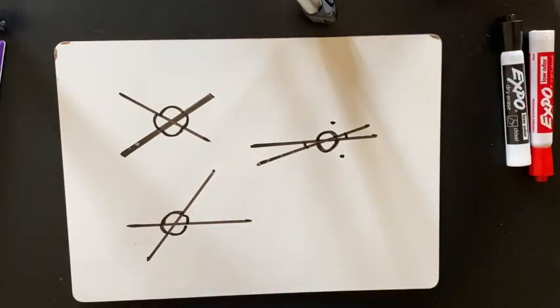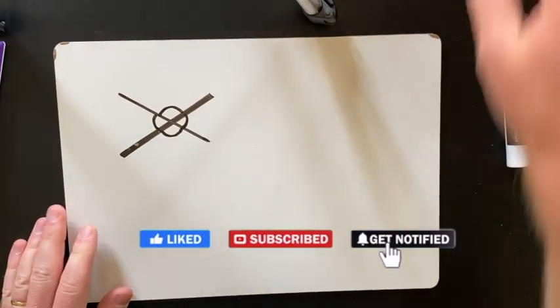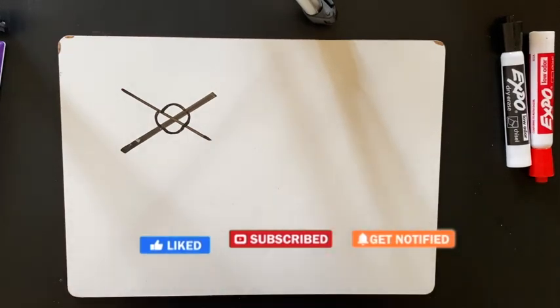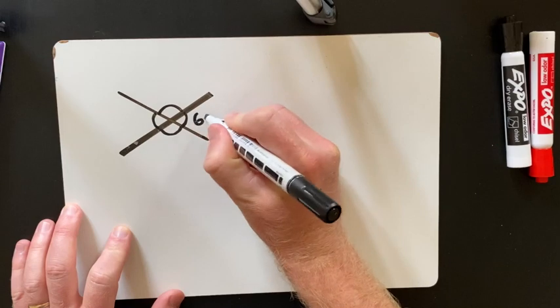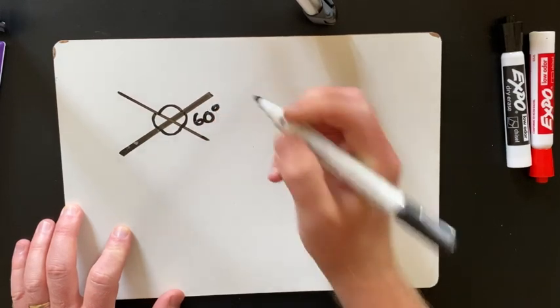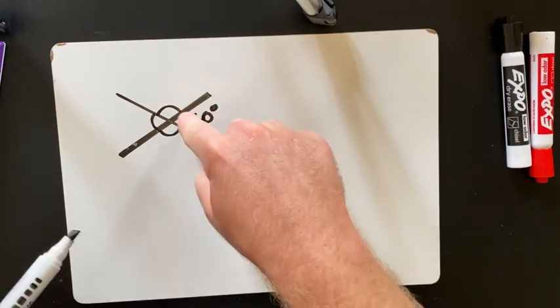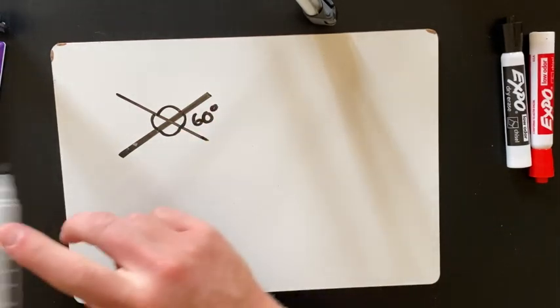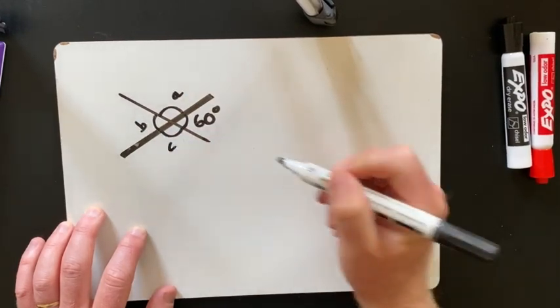Another thing that you will be asked to do or you may be asked to do is calculate missing angles. So if I told you that this angle here is 60 degrees, just by knowing one of the missing angles I can find out what angle A, B and C is.